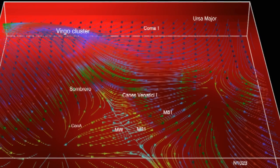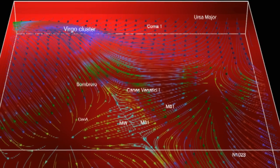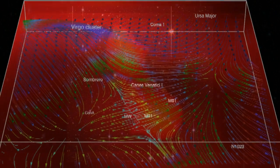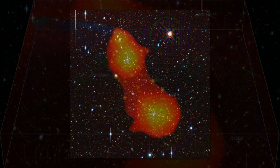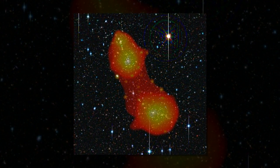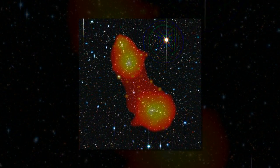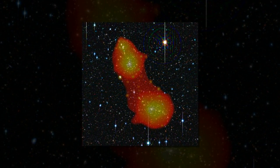By using the best available data to monitor galactic traffic in our neighborhood, Noam Libeskind from the Leibniz Institute for Astrophysics Potsdam, AIP, and his collaborators have built a detailed map of how nearby galaxies move.